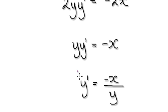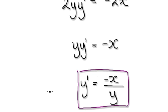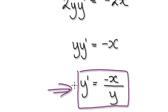So your y prime equals this thing here. This is your key stage. So now y prime is this, and we've got to differentiate it again — that will give us y double prime.